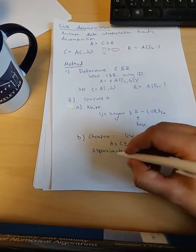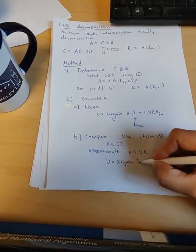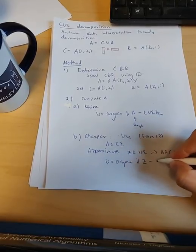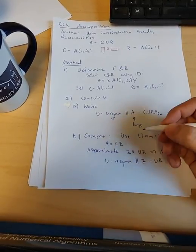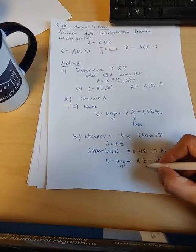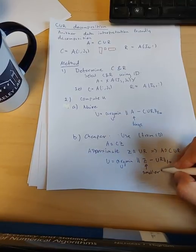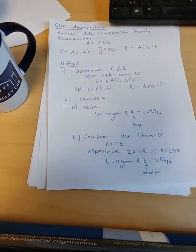So we can define U as the minimizer of Z minus UR in Frobenius norm. Note that this now is a smaller matrix. So this is cheaper, but can be less accurate.